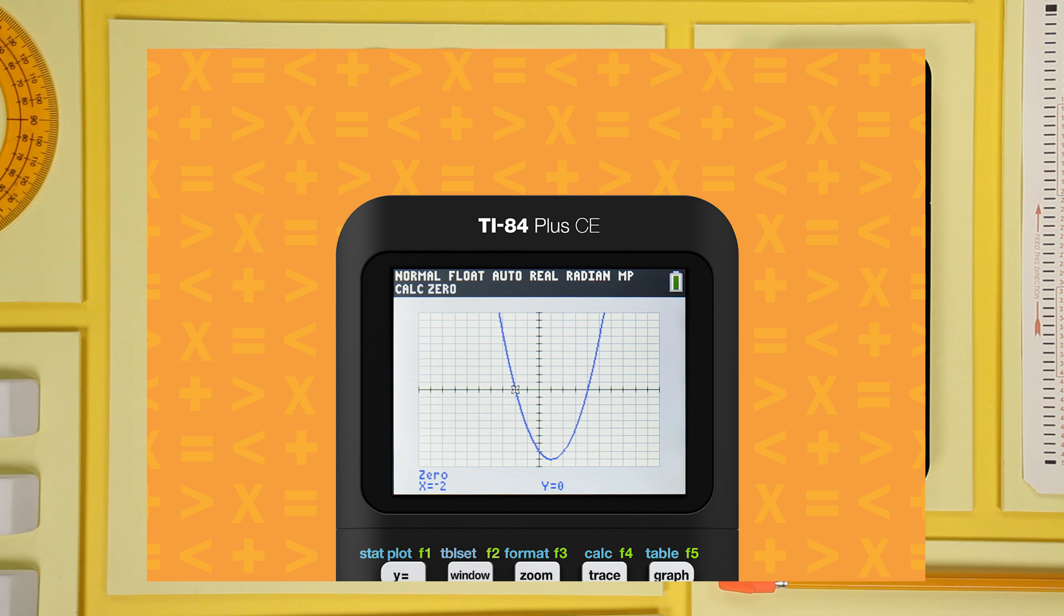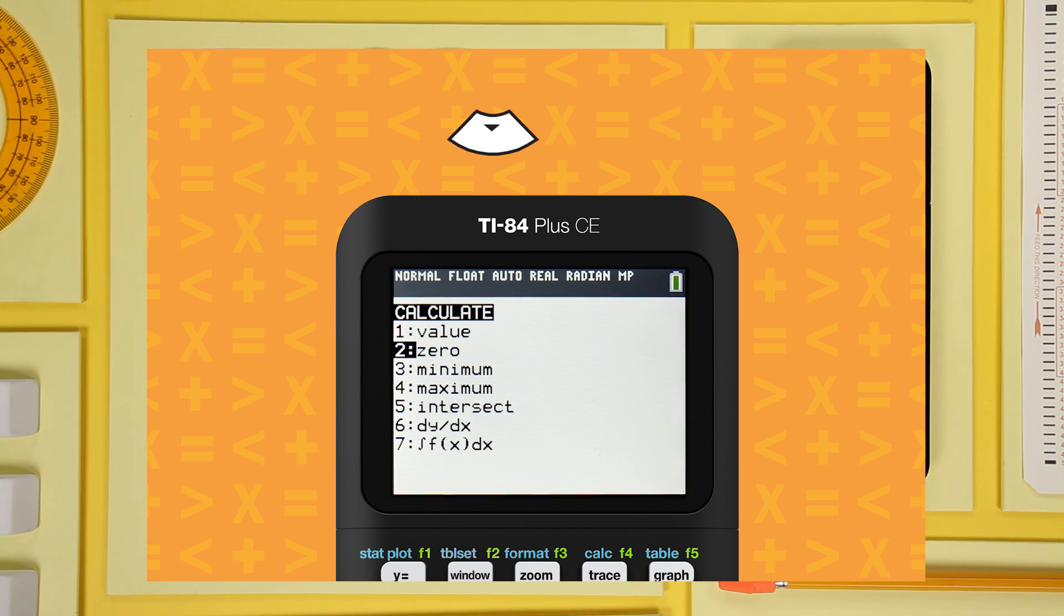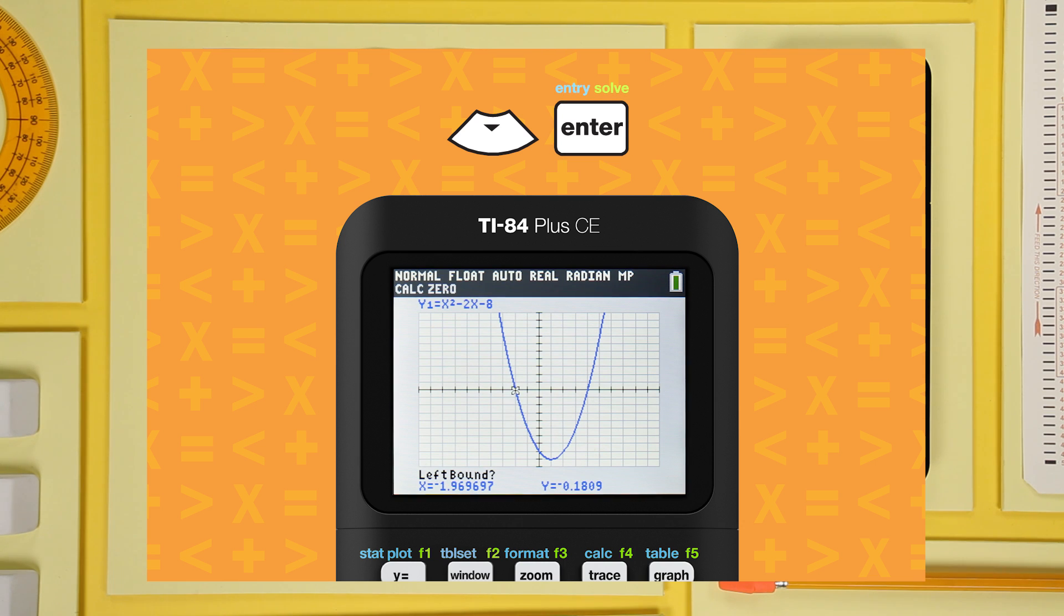Now, use the same process to find the other zero. Second, calc, select zero from the menu, and that puts your cursor on the graph.